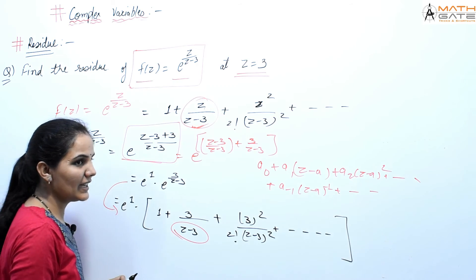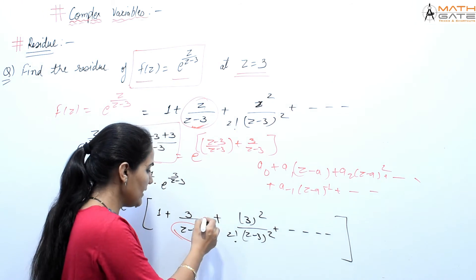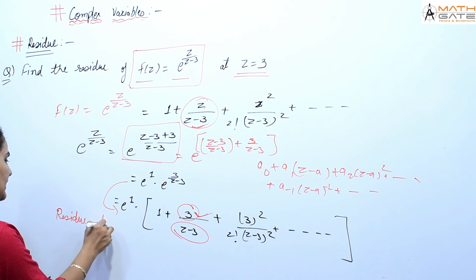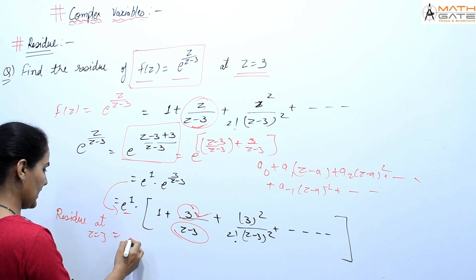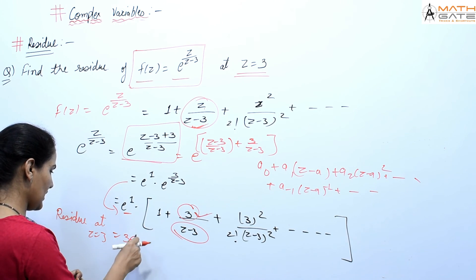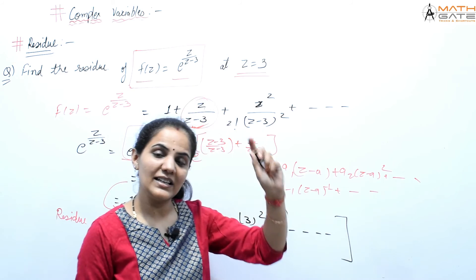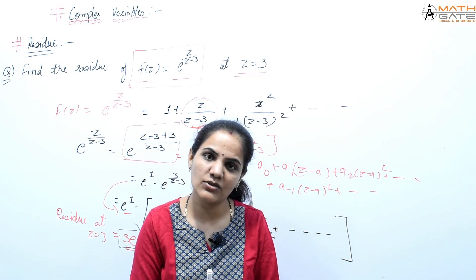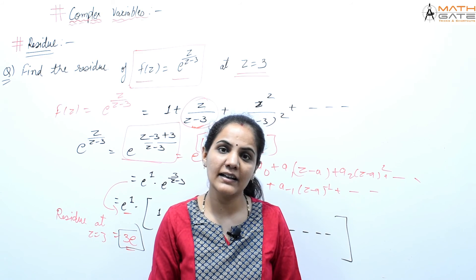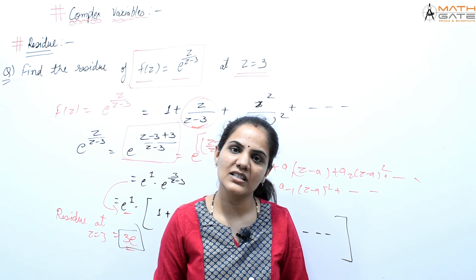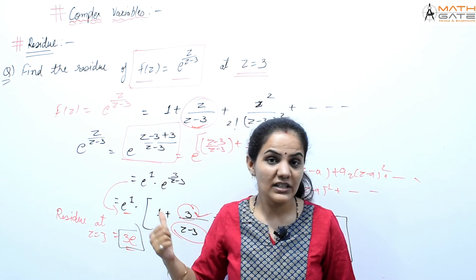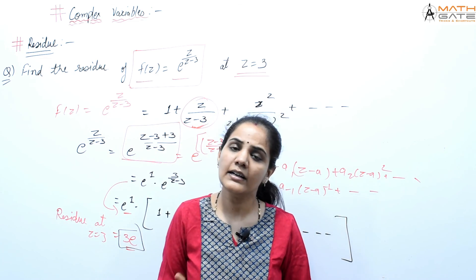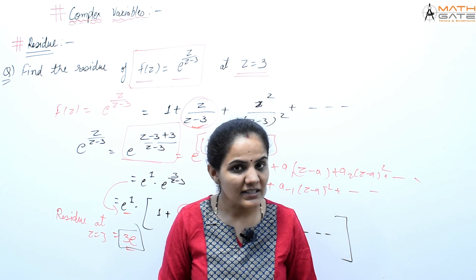So the residue of this function at z = 3 is e³. We have discussed some good basic questions on residue. The first two examples used the direct formula, while this last example used the Laurent series expansion directly — if any function is in the form of e^x, you can expand using the e^x series and solve directly.